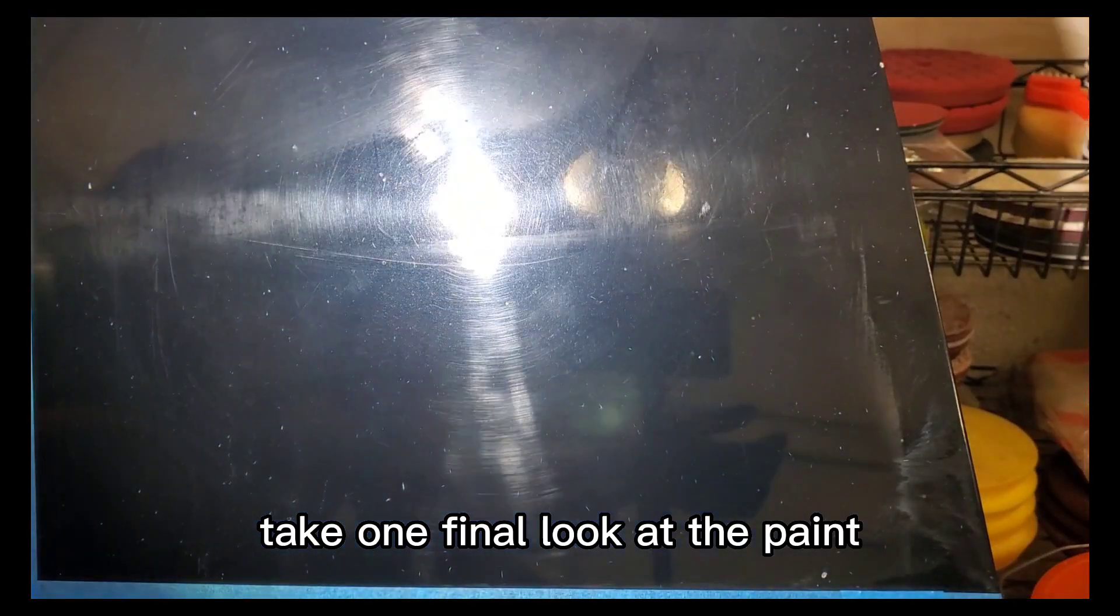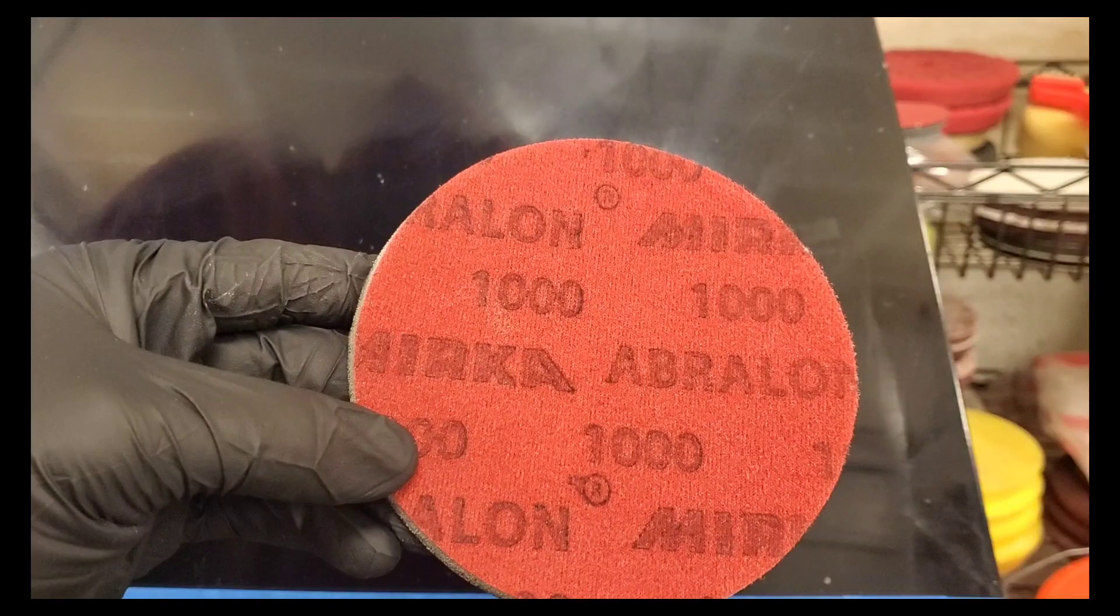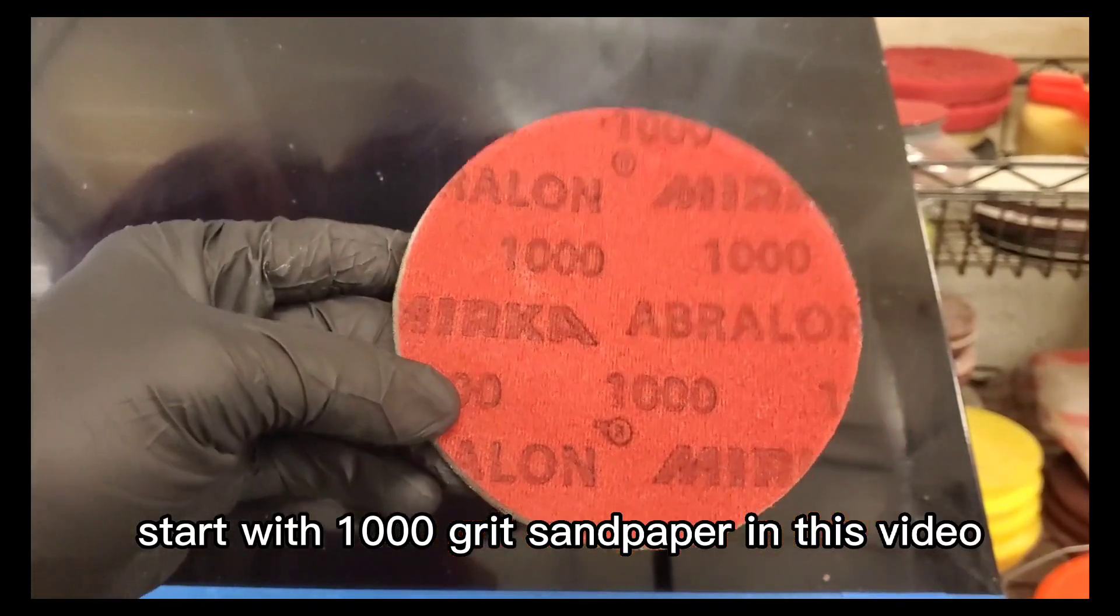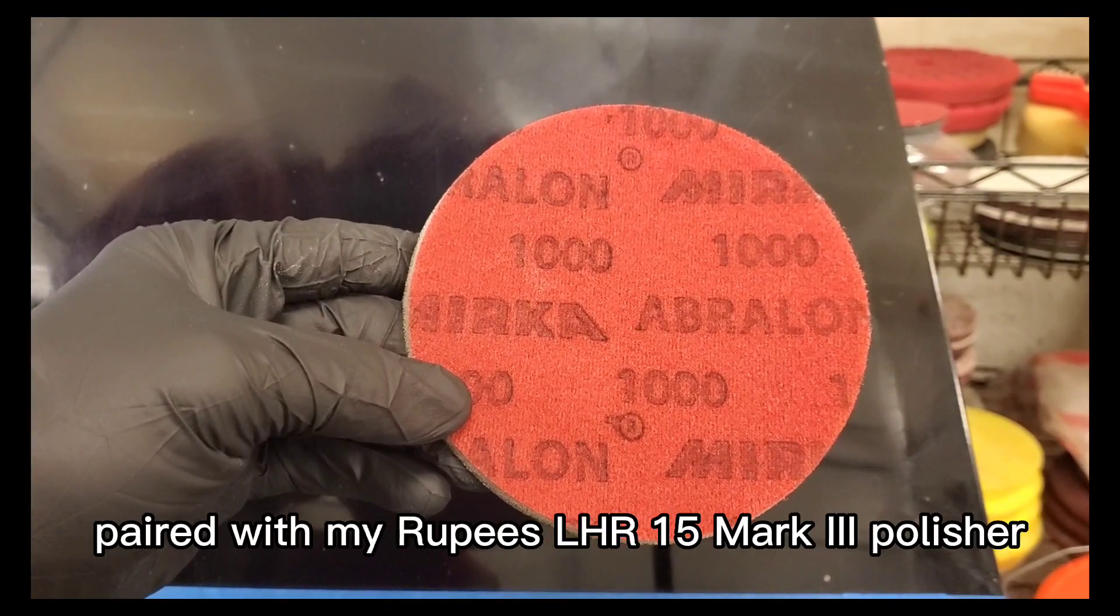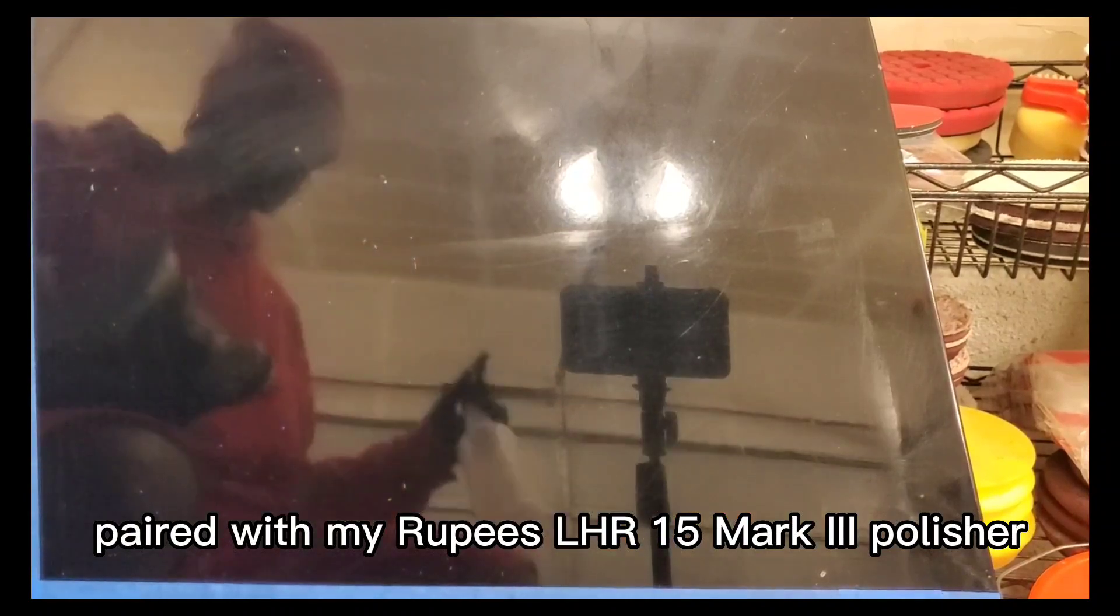Take one final look at the paint before the sanding process. Start with 1000 grit sandpaper. In this video, I'm using a Mirka 1000 grit sanding disc paired with my Rupes LHR15 Mark III polisher.